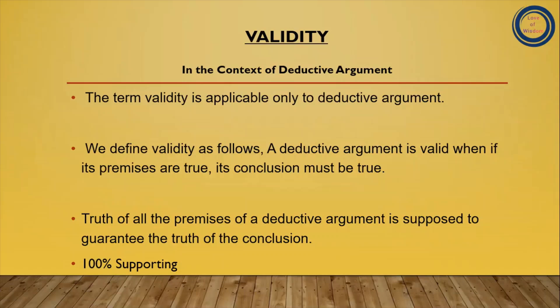Truth of all the premises of a deductive argument is supposed to guarantee the truth of the conclusion. Is liye hum keh sakte hain ki deductive argument mein conclusion ke true hone ki guarantee hoti hai with all true premises — agar sari premises true hain toh us argument ka conclusion bhi true hoga. So this is validity in the context of deductive argument.